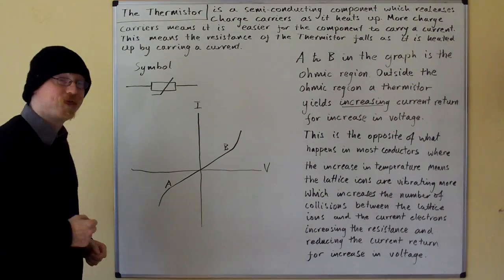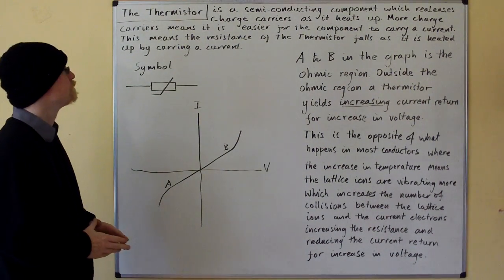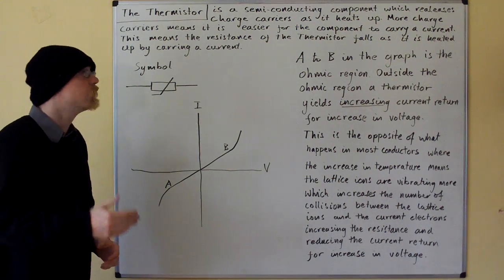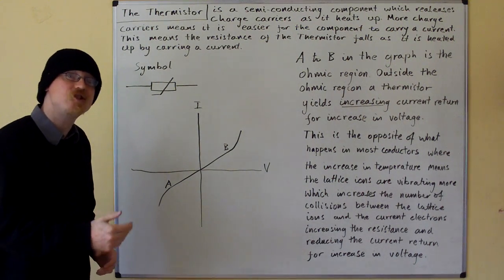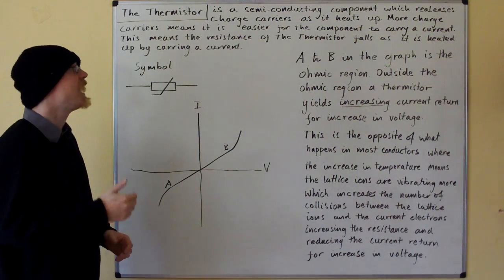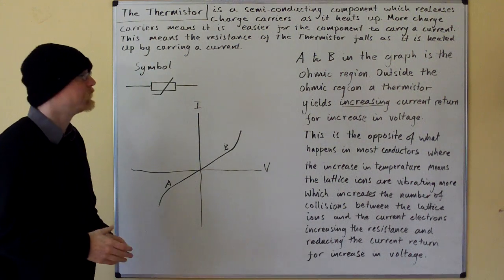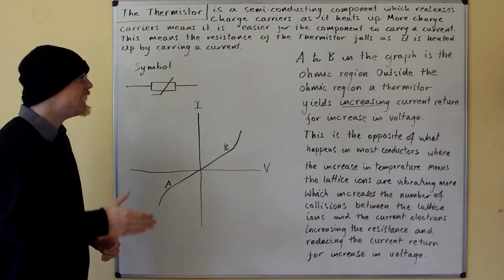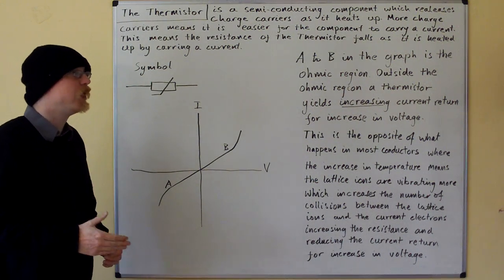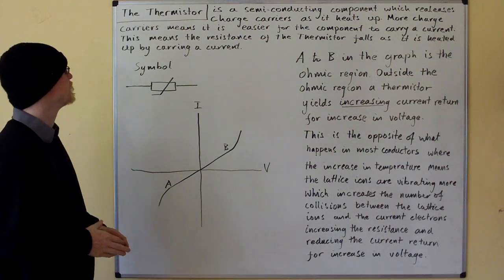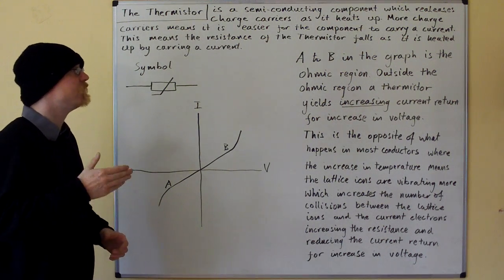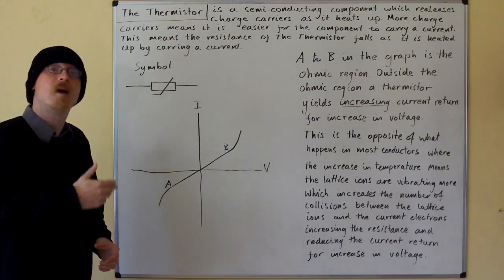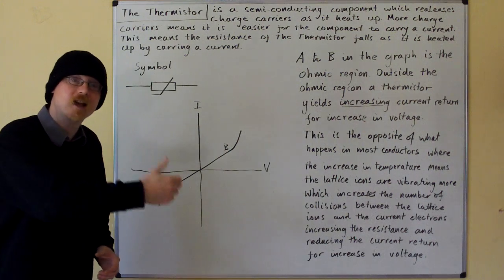The thermistor is a semiconducting component which releases charge carriers as it heats up. More charge carriers means it is easier for the component to carry a current. This means the resistance of the thermistor falls as it is heated up by carrying a current.